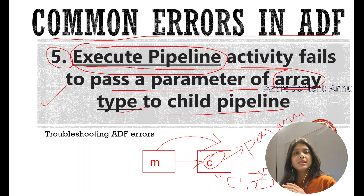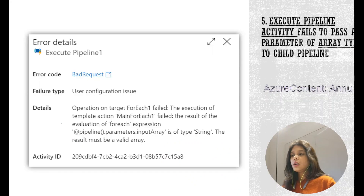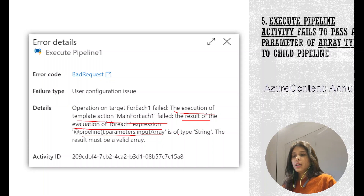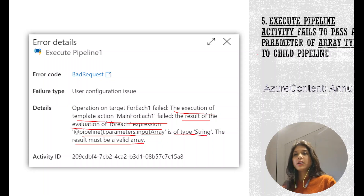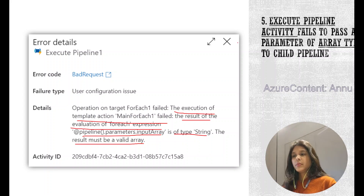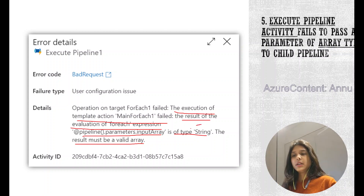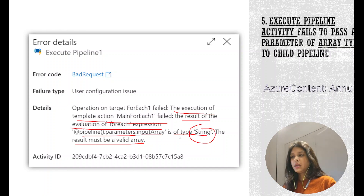We will see everything practically in this video. Here you can see what the error looks like - it says 'the execution of template action failed, the result of evaluation of for each expression is of type string, the result must be a valid array.' So basically it is expecting an array data type parameter, but even if you provide the parameter in array format it treats it as a string and throws this error.